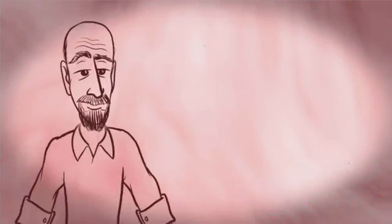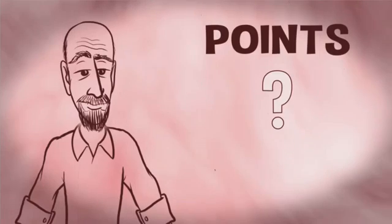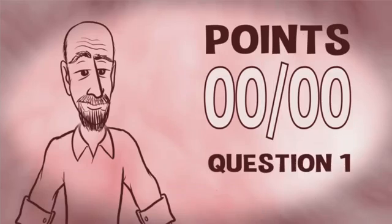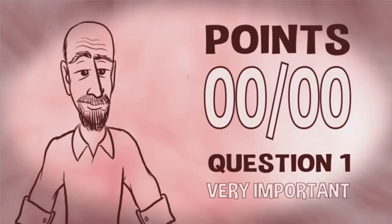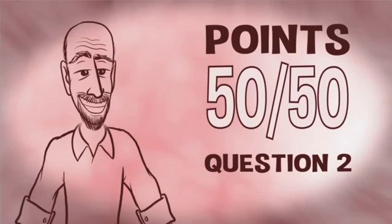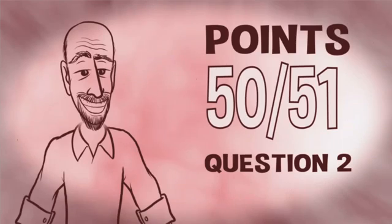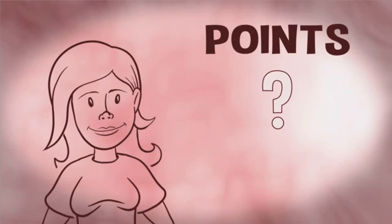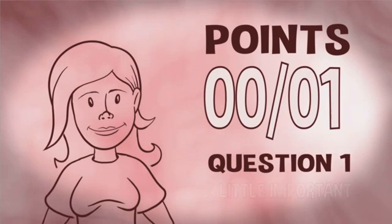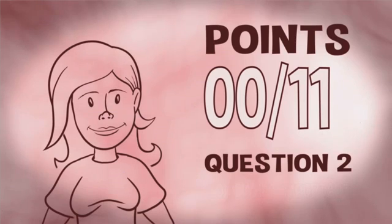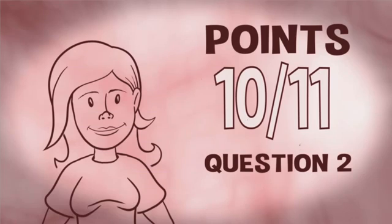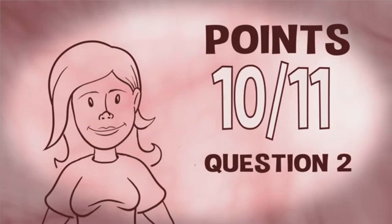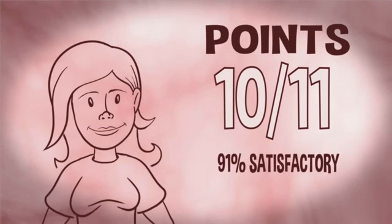Next, the algorithm makes two simple calculations. The first is: how much did B's answers satisfy you? That is, how many possible points did B score on your scale? You indicated that B's answer to the first question about messiness was very important to you — it's worth 50 points — and B got that right. The second question is worth only 1, because you said it was only a little important, and B got that wrong. So B's answers were 50 out of 51 possible points — that's 98% satisfactory. The second calculation is how much did you satisfy B? B placed 1 point on your answer to the messiness question and 10 on your answer to the second. Of those 11 points, you earned 10 — you satisfied each other on the second question. So your answers were 10 out of 11, which equals 91% satisfactory to B.